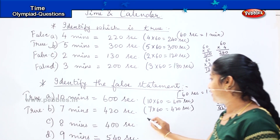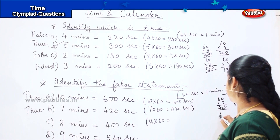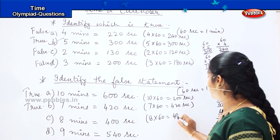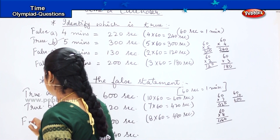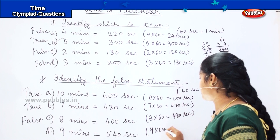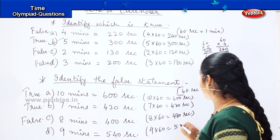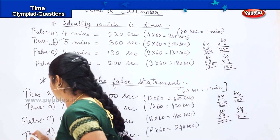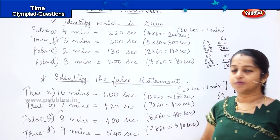For option C, 8 minutes: 8 into 60 — 6 eights are 48 — so I should get 480 seconds. But the answer given is 400, which means it is a false statement. For option D, 9 minutes: 60 into 9 — 6 nines are 54 — so I should get 540 seconds, and that matches, so it is true. Therefore, option C is the answer for this question.